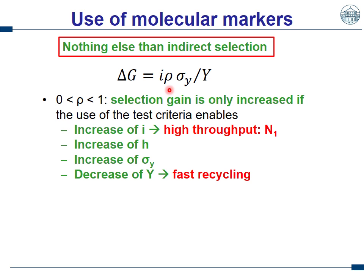Yes, but we could still improve it — if, for instance, the use of genomic selection offers us the possibility to increase in parallel the selection intensity, the genetic variance, or to reduce the number of years required for a breeding cycle. Using an indirect criterion has a drawback and is only beneficial when it has additional positive effects.